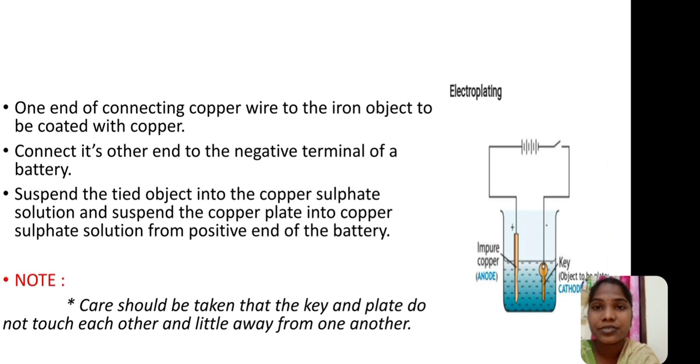Then, from this figure we can observe that one end of connecting copper wire to the iron object to be coated with copper. Connect its other end to the negative terminal of the battery. Suspend the tied object into the copper sulfate solution and suspend the copper plate into the copper sulfate solution from the positive end of the battery.